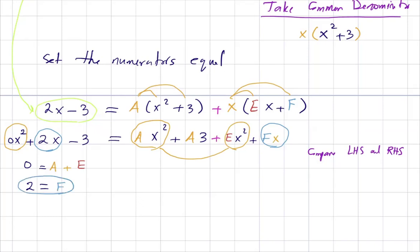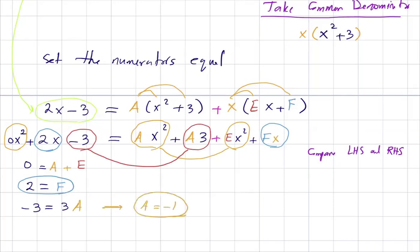We found the value for F equals 2 and A equals negative 1. Plugging A into A plus E equals 0 gives negative 1 plus E equals 0, so E equals 1. We found all the missing pieces.